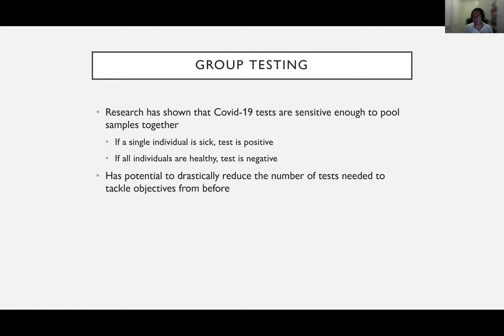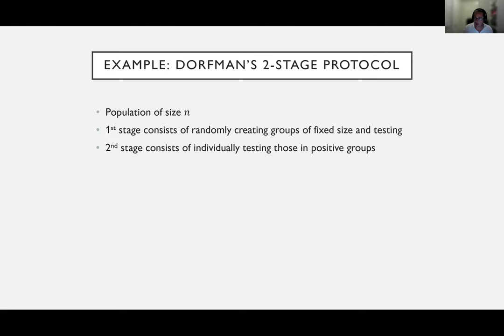Given these objectives, a key part of the solution we implement is the primitive of group testing. For those not familiar, group testing is a technique that has been around since the 1940s and used for other diseases. Essentially, one takes multiple samples from multiple individuals, mixes them into a single sample, and utilizes the resources of a single test to test the mixed sample. If the result is positive, somebody within the mixed sample is infected; if negative, everybody is healthy. This functionality has the potential to drastically reduce the number of tests needed.